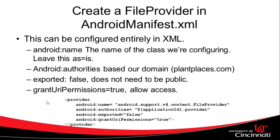To create a file provider in the Android manifest we need to set it up with XML using certain attributes. Android name is the name of the class we're configuring — the example shown we can leave as-is. Android authorities is based on the domain name of our application; if you're unsure, look in the build.gradle file, as it's the unique identifier of your app on the Google Play Store. Exported can remain false, and grant URI permissions equals true means we want to allow access. We'll set all this up in a separate video.